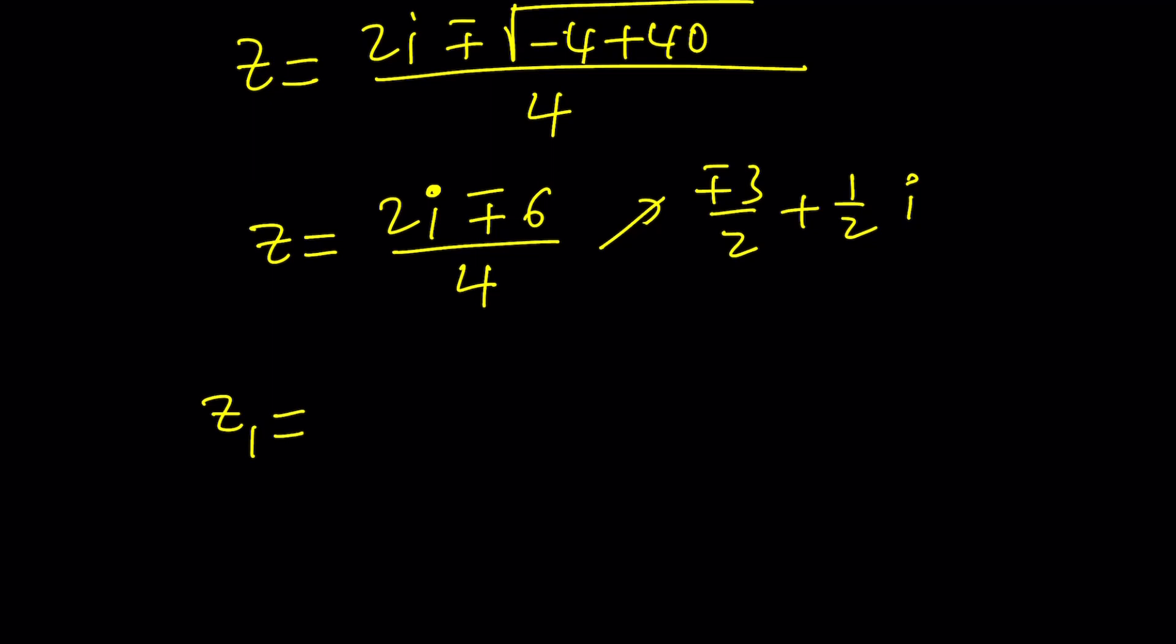So those are going to be the z values. If you wanted to write them separately, z sub 1 could be written as 3 over 2 plus 1 half of i. And z sub 2 would be negative 3 halves plus 1 half of i. So they'll have the same imaginary parts, but different real parts. So that's the first method.